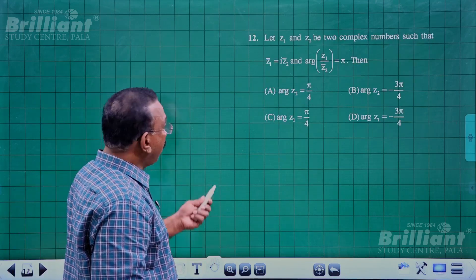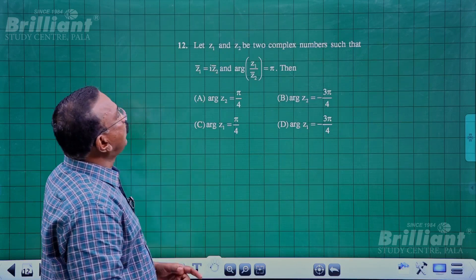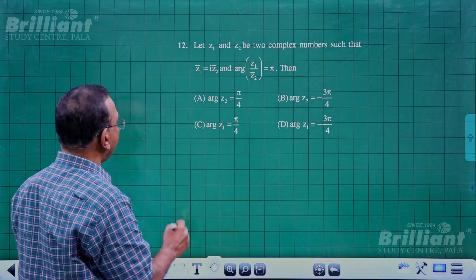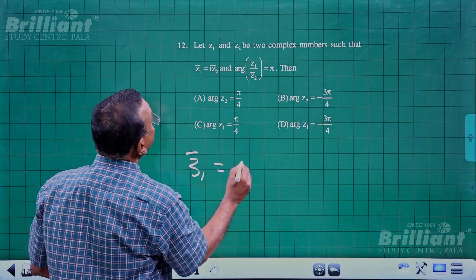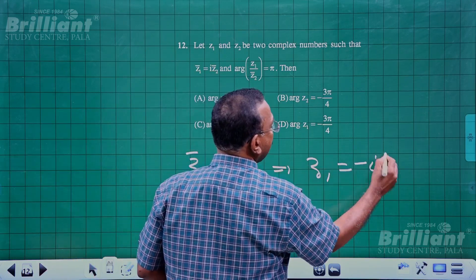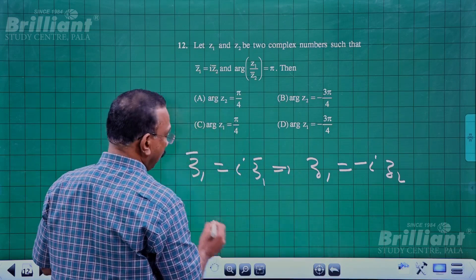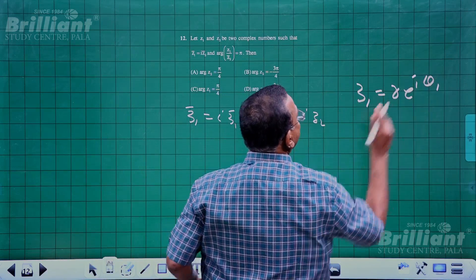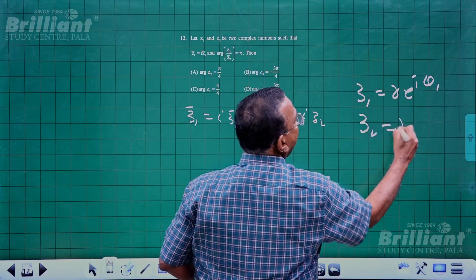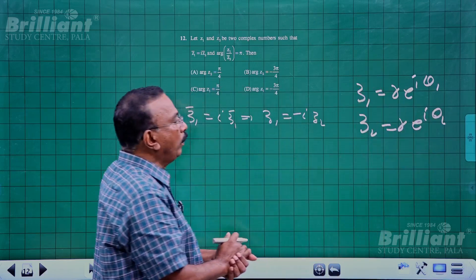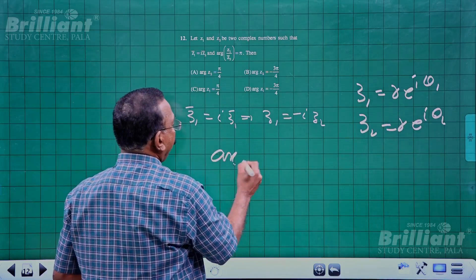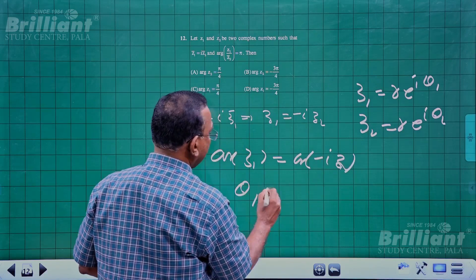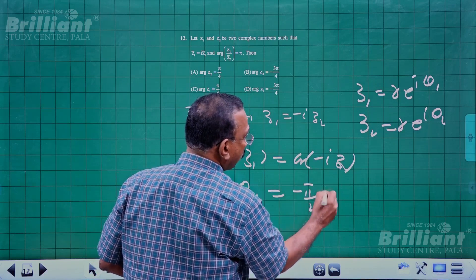Question 12: z₁ and z₂ are complex numbers such that z̄₁ = iz̄₂, which implies z₁ = -iz₂. Let z₁ = re^(iθ₁) and z₂ = re^(iθ₂) with equal moduli. Then arg(z₁) = arg(-iz₂) = -π/2 + θ₂, so θ₁ - θ₂ = -π/2.